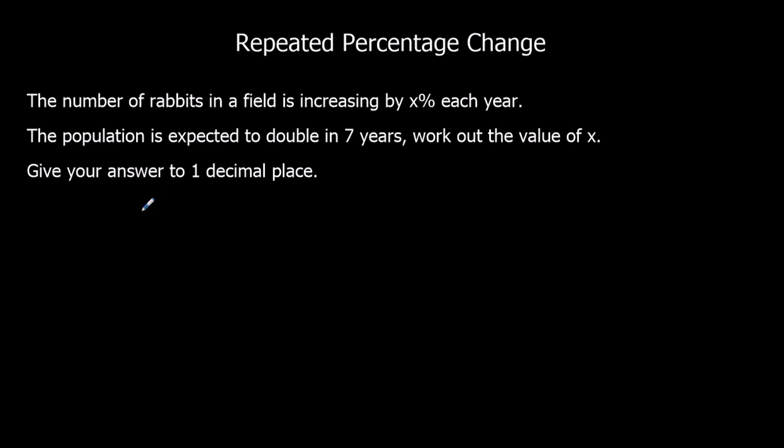So we're going to have an original number of rabbits. We're going to multiply it by a multiplier. I'm not going to use X because X is already used, so I'll just put Y. So the original multiplied by Y seven times. So the original multiplied by the multiplier seven times for seven years. And it doubles. So it's two times the original amount.